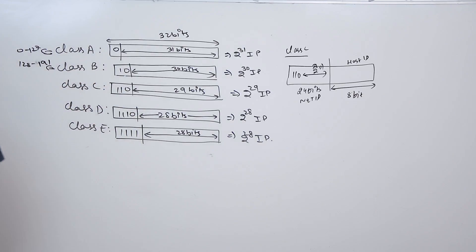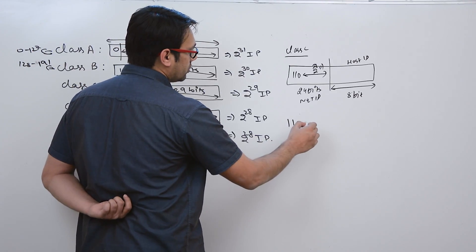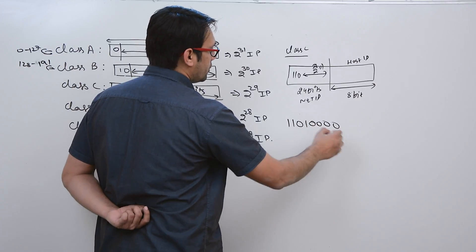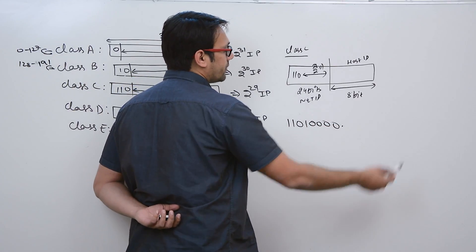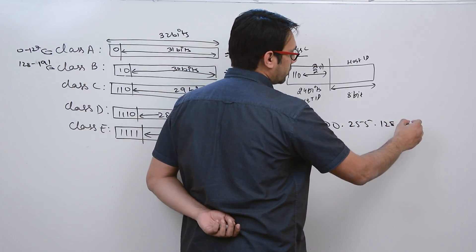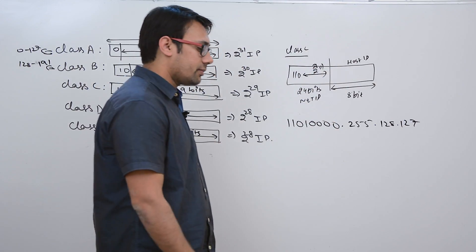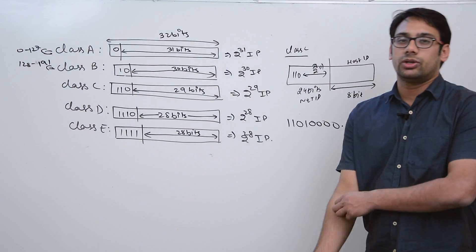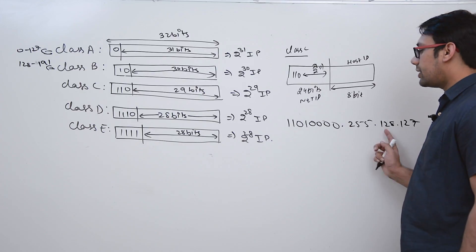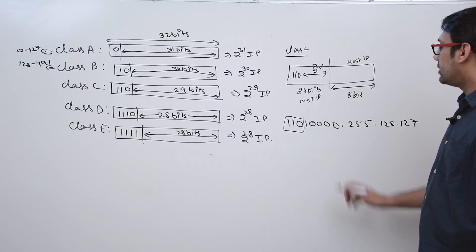When we look at this in terms of octets, a Class C IP address might look like 11010000 in the first octet, followed by values such as 255, 128, and 127 for the remaining octets. I'm writing these in decimal because converting them to binary would take a lot of time, but the key point is using the octet decimal representation.